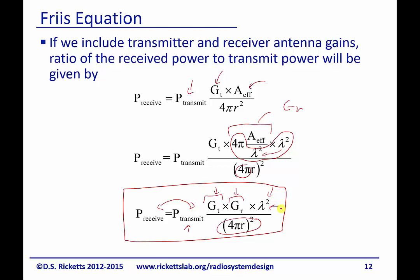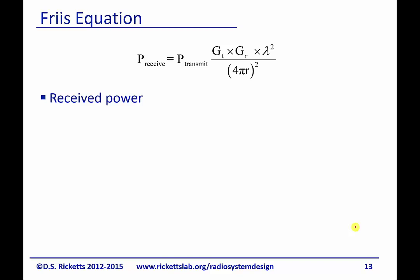Some things to recognize with the Friis equation: it gives you your received power, which decreases with distance as 1/r². It increases by using a larger or more directive antenna.